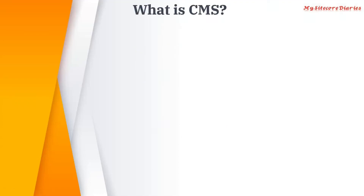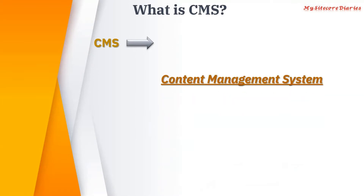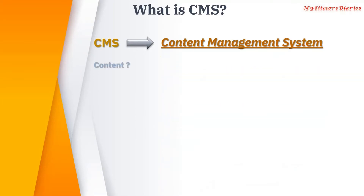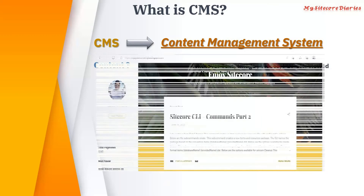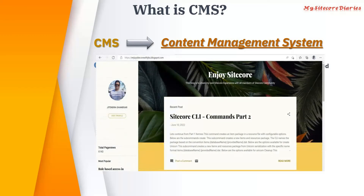Let's ask: what is CMS? CMS is Content Management System. So what is content? Basically, content is whatever text, image, video, PDF, etc. viewed on a website. Let's take an example of my blog site — whatever you are viewing on my blog site, like the heading, that is content. My photo is content. My background is content. Whatever labels you are seeing is content.